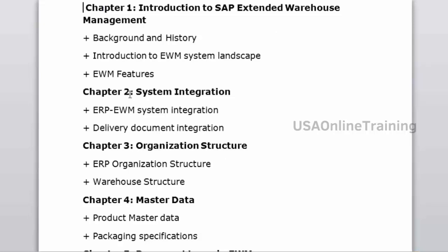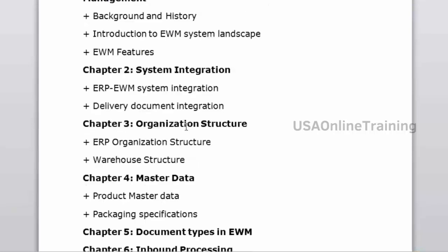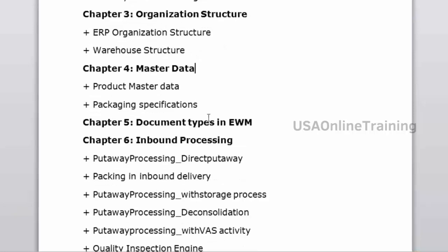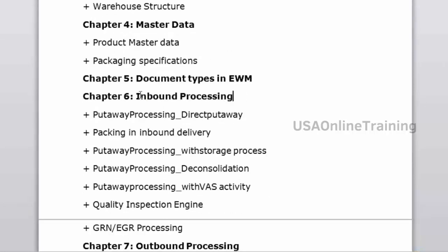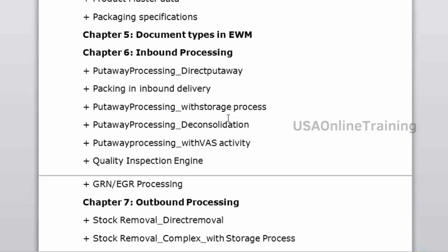Course content covers: introduction and system integration — how ERP and EWM are integrated and how delivery documents are integrated across both systems. Then organization structure in EWM and ECC, master data, and document types. The process starts with inbound processing — direct put-away: how you receive products and keep them in warehouse bins, and packing in inbound storage.